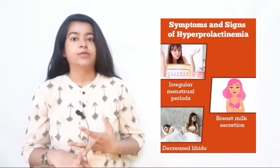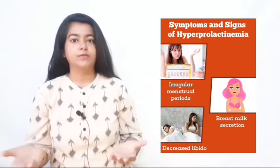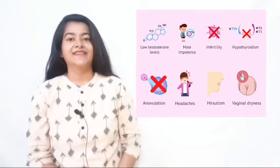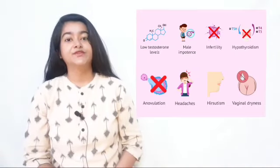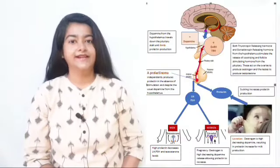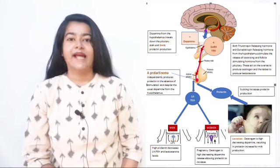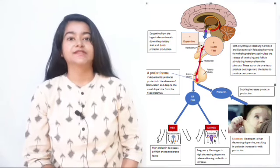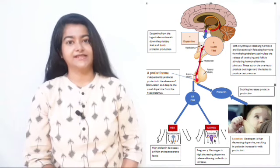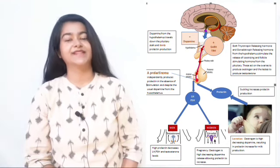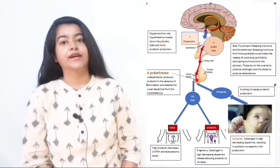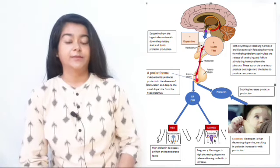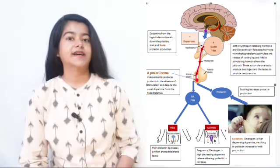Whether it is male or female, elevated prolactin is seen in both. Prolactin is a hormone secreted by a gland situated in the brain called the pituitary. It is a protein usually known for its lactation properties — that is, the production of breast milk — but prolactin is not only secreted in females; it also performs various functions in males.